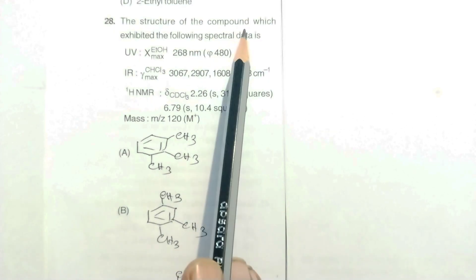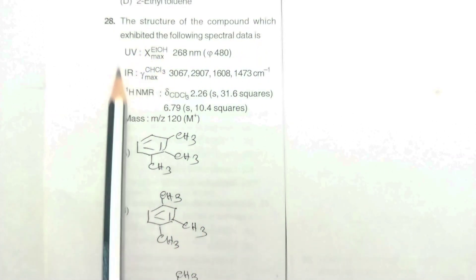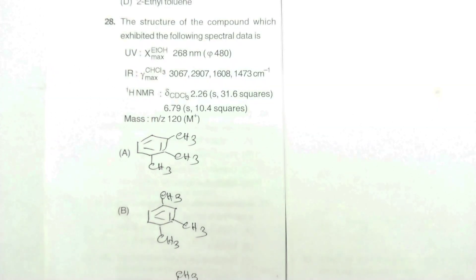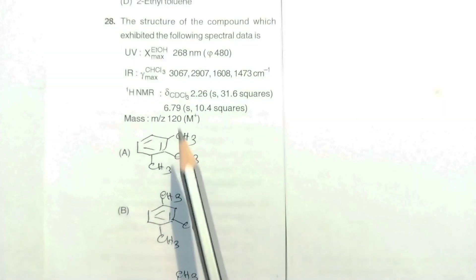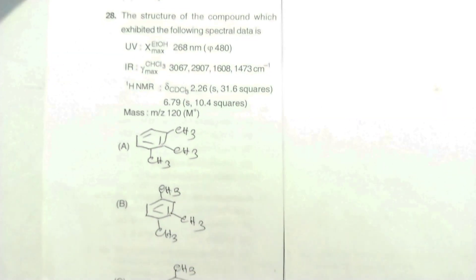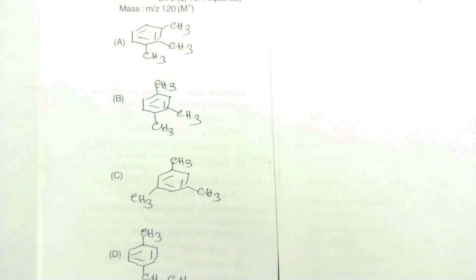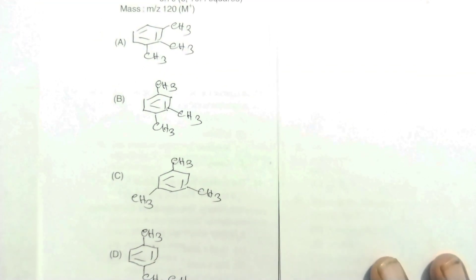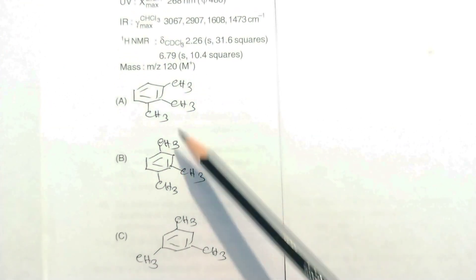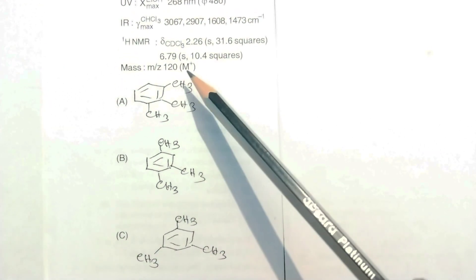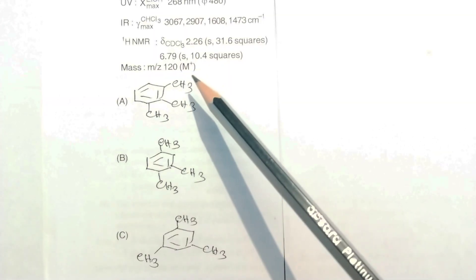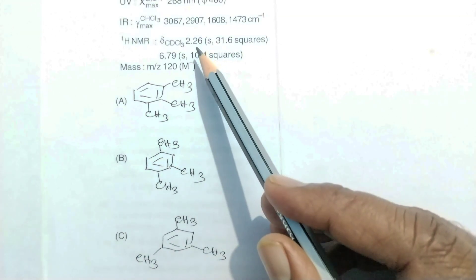The next question asks for the structure of a compound which exhibited given spectral data, with four options to choose from. When looking at the mass data, we cannot distinguish the structures because the m/z for the molecular ion peak is the same, that is 120, as per the data.